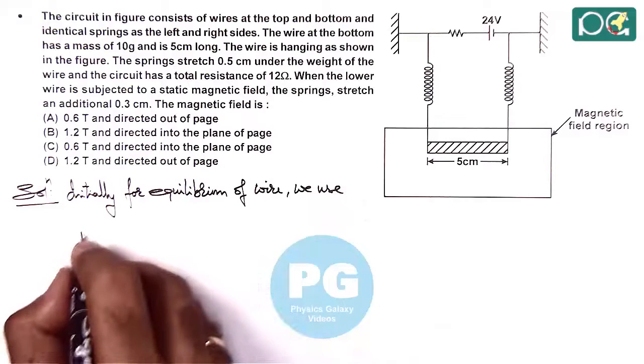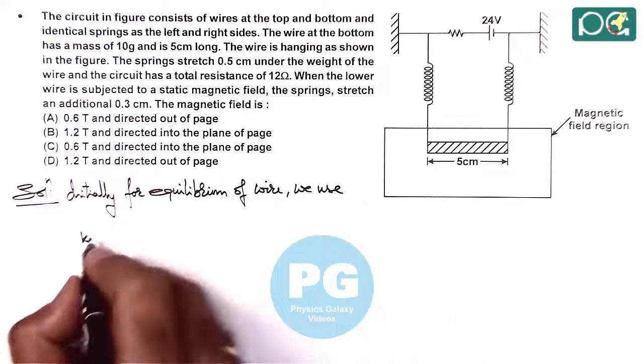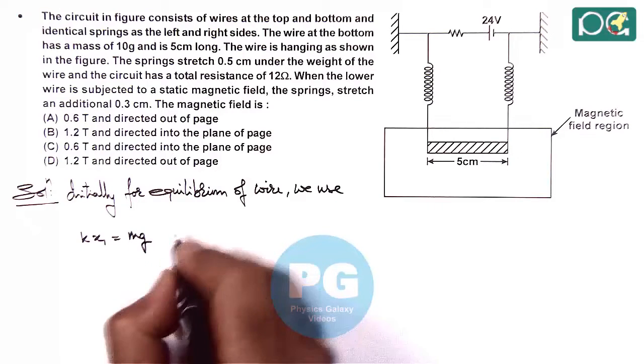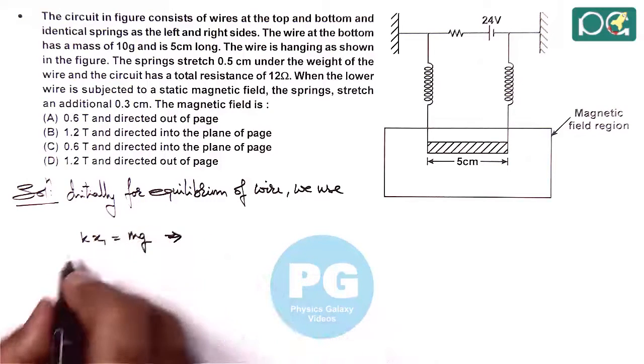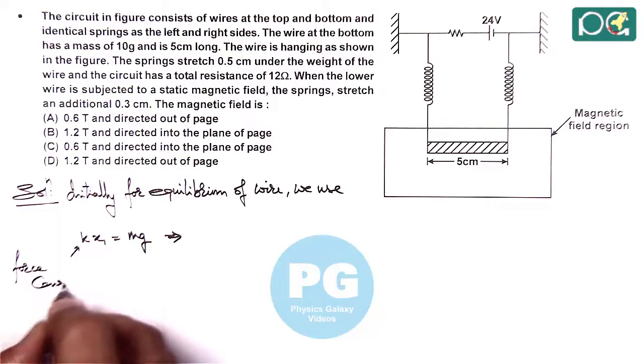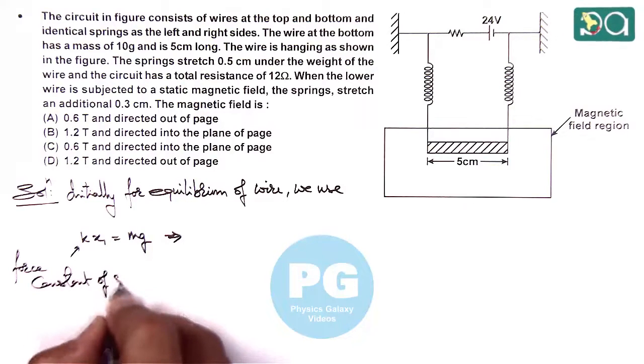If springs are elongated by distance x, then kx₁ equals mg, where k is the force constant of the springs.